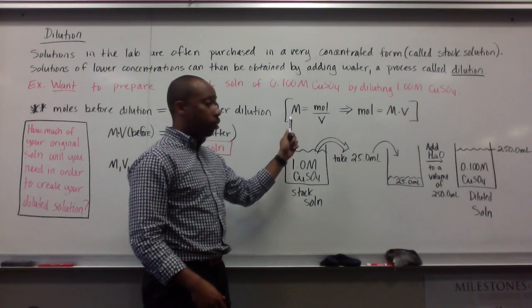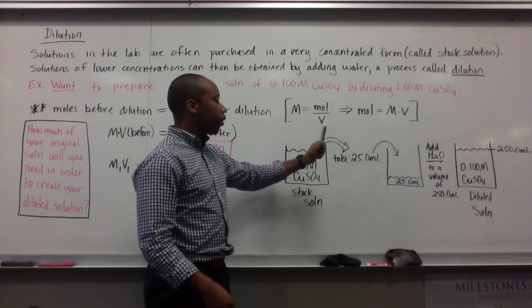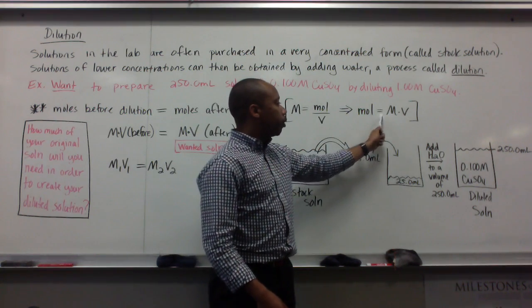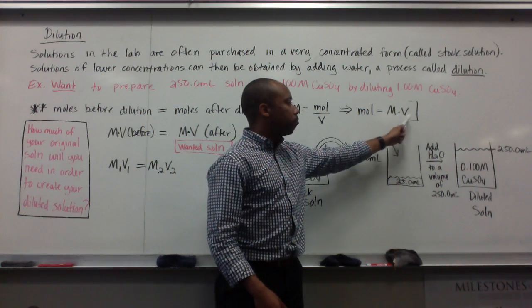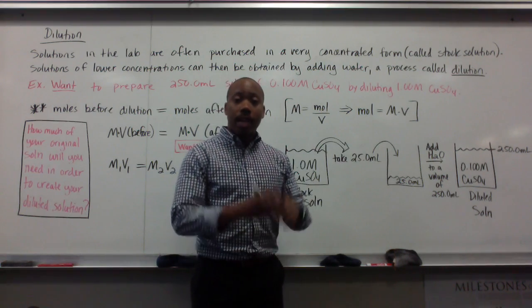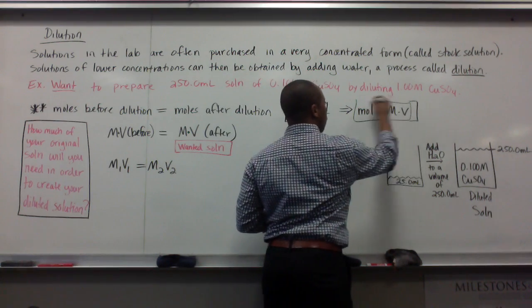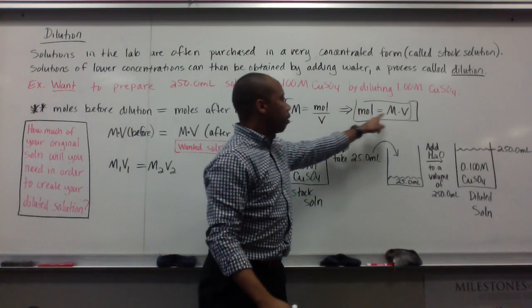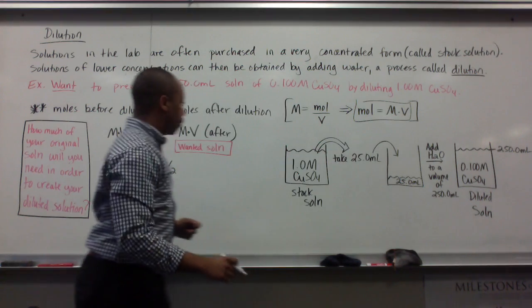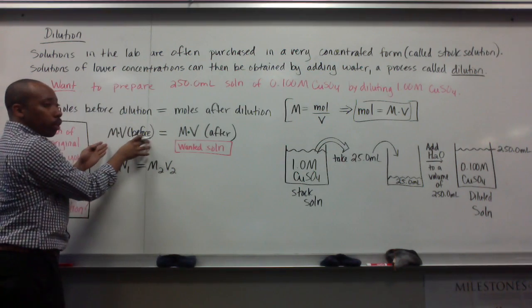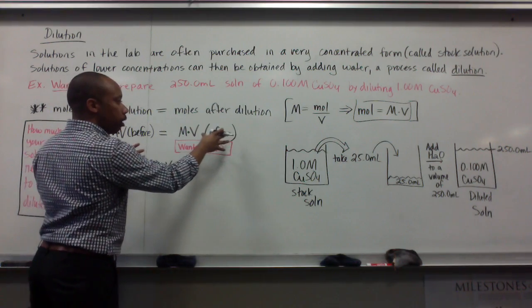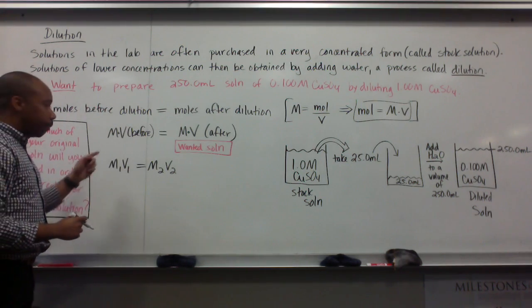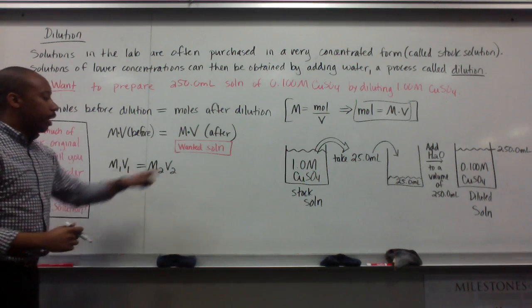We know that molarity is equal to moles divided by the volume. Your concentration of a solution equals your moles of solute divided by the volume of your solution. If I rearrange this algebraically for moles, moles are equal to your concentration times your volume of solution. With that same thought, moles before dilution is equal to concentration times volume. So, concentration times volume before equals concentration times volume after. M times V before equals M times V after.